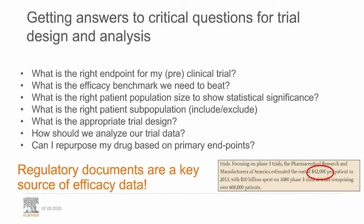Getting answers to critical questions for trial design is essential. What is the efficacy benchmark we need to beat? What's the right patient population size to show statistical significance? What is the right patient population — what patients should we include or exclude? There's an interesting number here: including patients in a clinical trial costs around $42,000 per patient. Including 100 patients too many is of course a significant cost driver. On the other hand, too few patients might endanger the statistics of your trial.